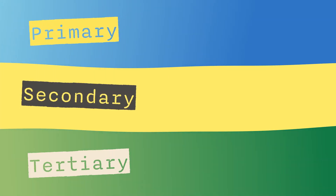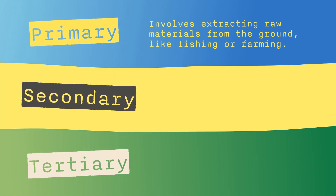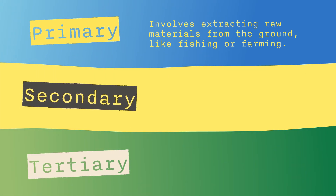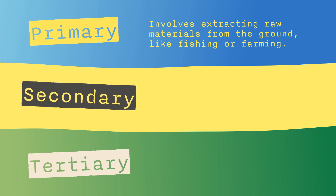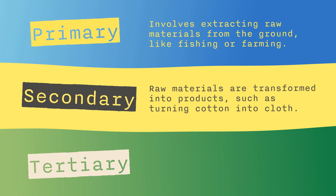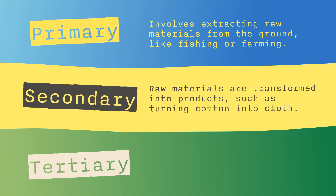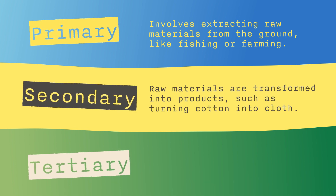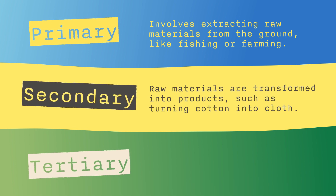Primary industry involves extracting raw materials from the ground, like fishing or farming. Secondary industry is where those raw materials are transformed into products, such as turning cotton into cloth.